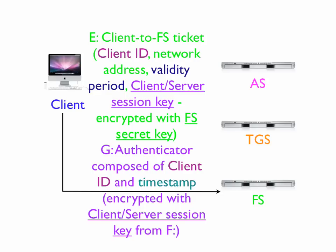The client sends two messages to the file server. Message E is the one received from the TGS earlier — it contains the client ID, network address, validity period, and the client-server session key, and only the file server can decrypt it. The client also sends message G, which is an authenticator composed of the client ID and a timestamp, encrypted with the client-server session key.